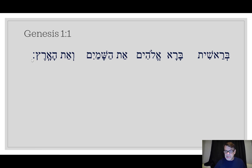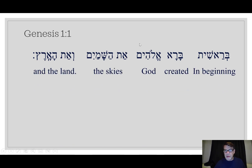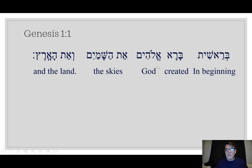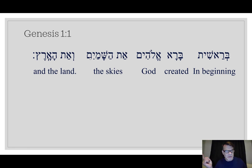It translates — you can probably quote it — 'In beginning,' there's no 'the' there actually. Some think it should be 'In the beginning when God created,' but this is not an exegesis video. 'In beginning, created God' — and again, the verb comes first, so this is 'In beginning, God created.' The verb comes before the subject usually. Then we have the definite direct object marker, and then 'the skies' — we say 'the heavens,' though I think that has a different connotation for us. Eit is the definite direct object marker — direct object approaching.